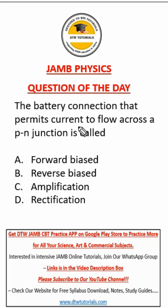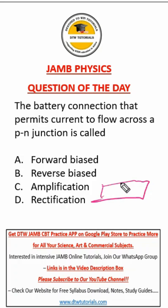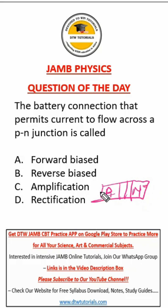A battery connection that permits current to flow across a PN junction is called — now what's a PN junction? Let me just quickly draw it here. You have P and you have N. P represents holes and N represents electrons.